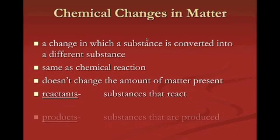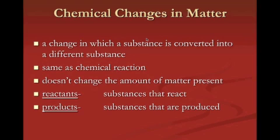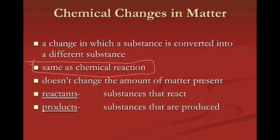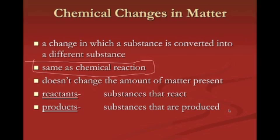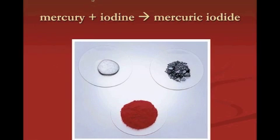Chemical changes in matter involve a substance being converted into a different substance — chemical always means something brand new. A chemical change is the same as a chemical reaction. It doesn't change the amount of matter present, relating back to the conservation of mass. Reactants are the substances we start with; products are the substances produced. For example, mercury and iodine are the reactants, and mercury iodide would be the product.